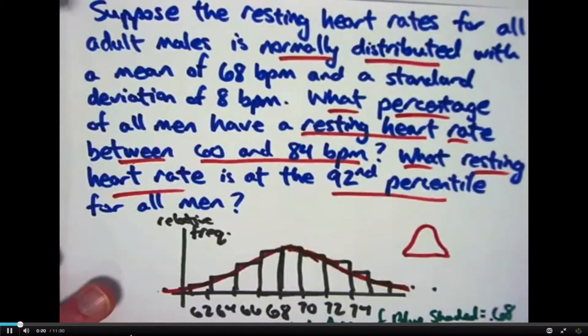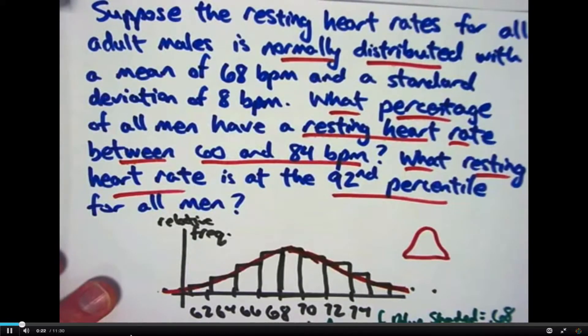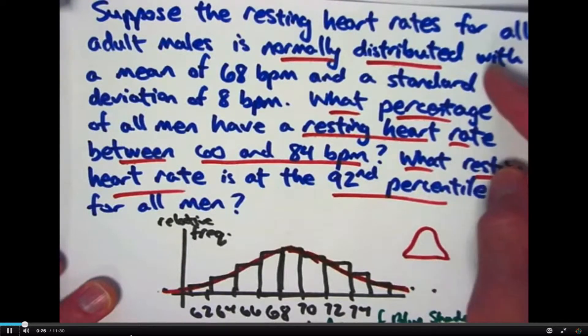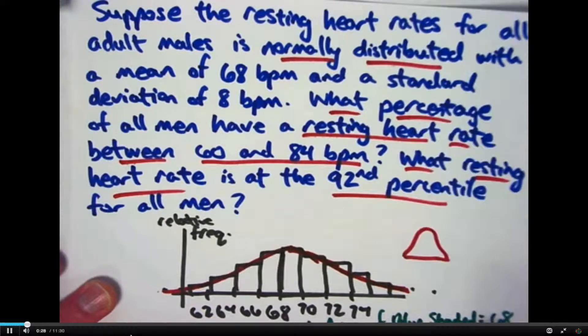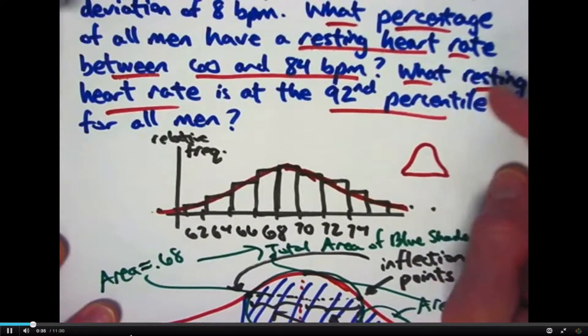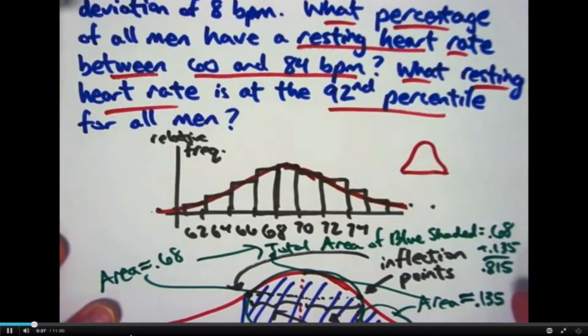We're looking at the resting heart rates of all adult males in the whole world, and we're pretending we know what it's distributed like. It's normally distributed with a certain mean and a certain standard deviation. We're interested in figuring out what percentage of men have a heart rate between 60 and 84 beats per minute at rest.